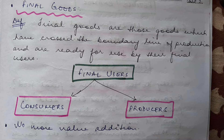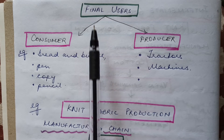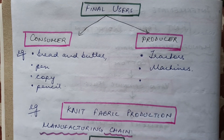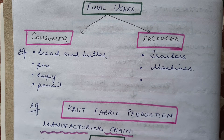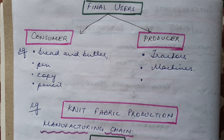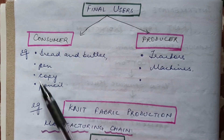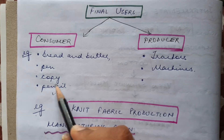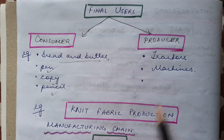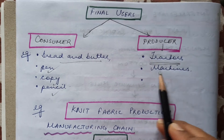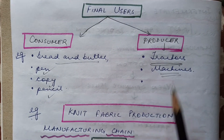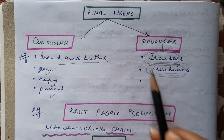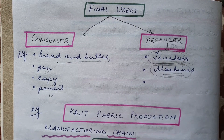Final users are consumers and producers, and depending on who the person is, the type of final goods they use will also differ. For example, if we take a consumer, the kinds of final goods they use are bread and butter, pen, pencil, copy, etc. Whereas a producer will be using tractors and machines as final goods.